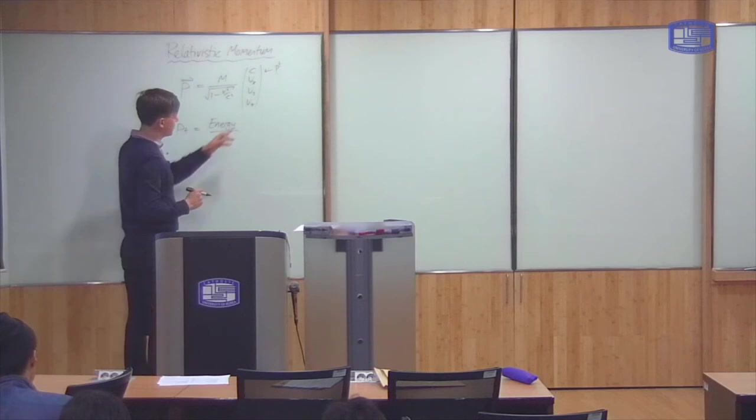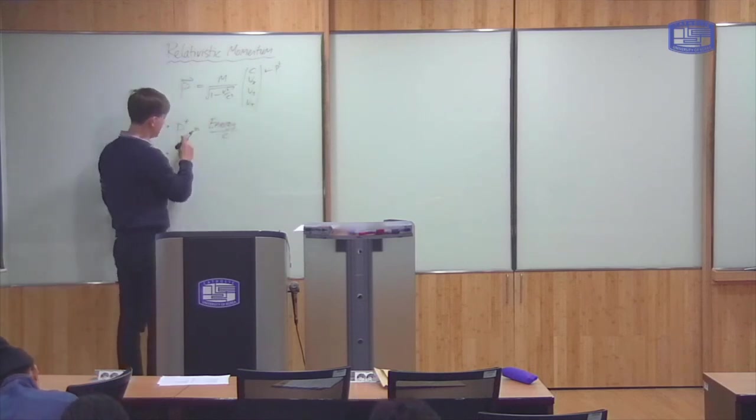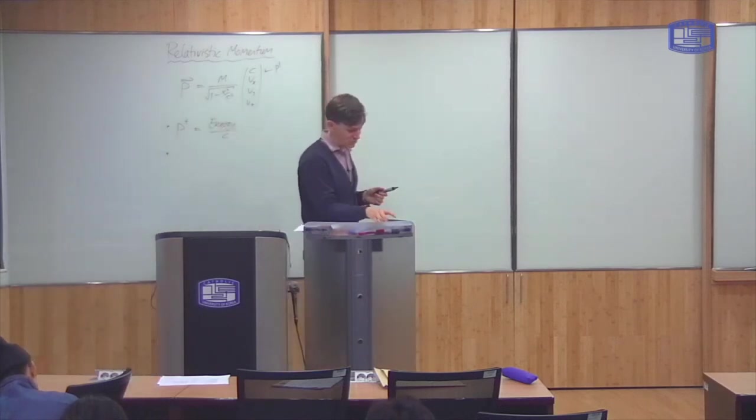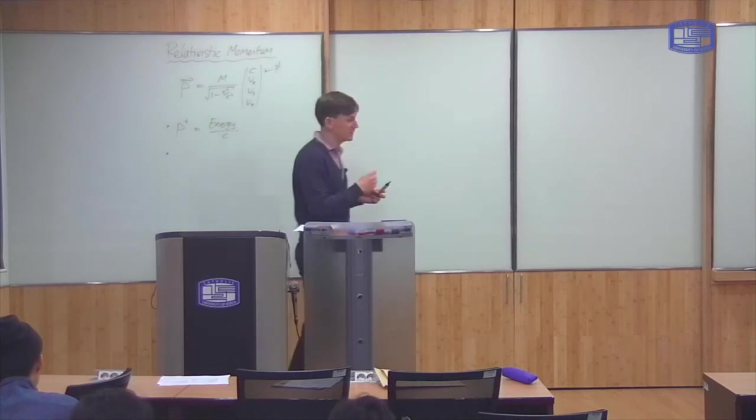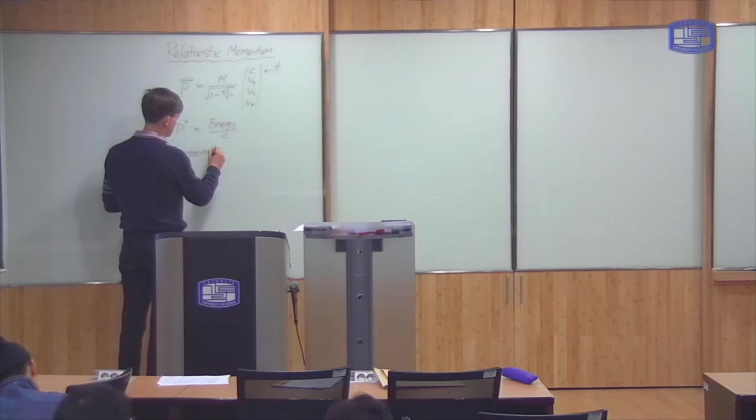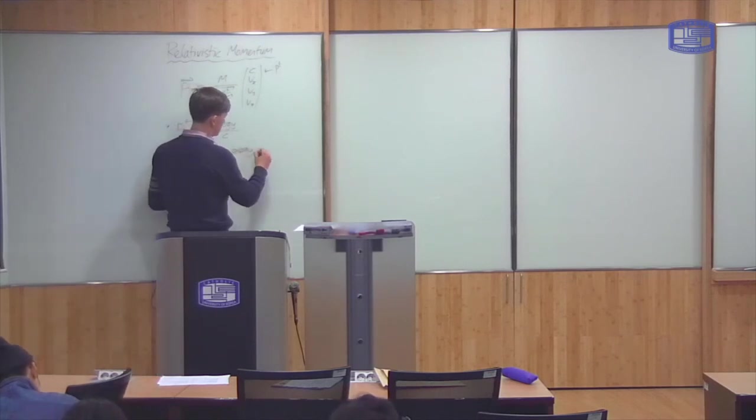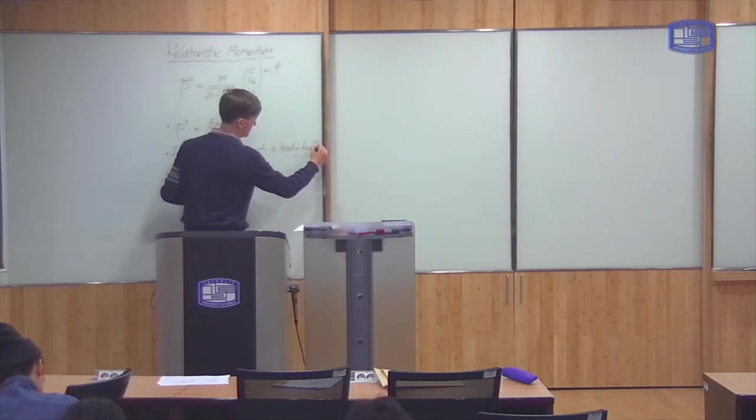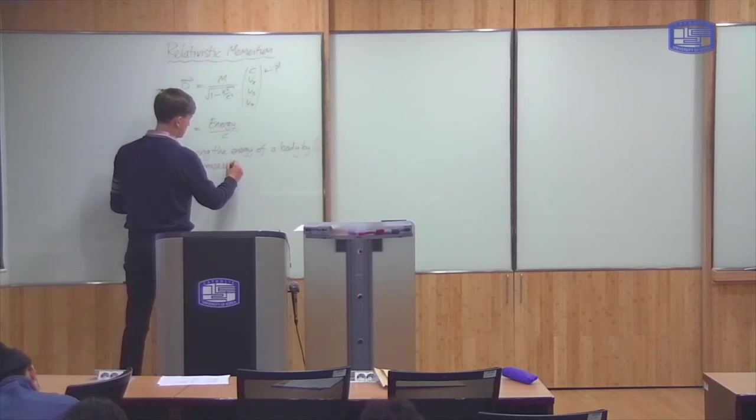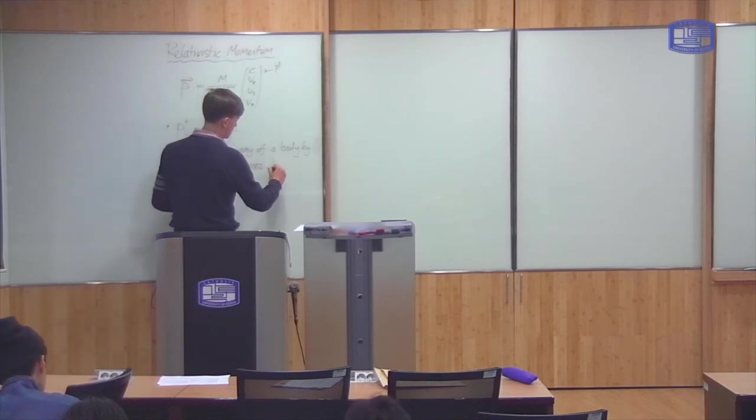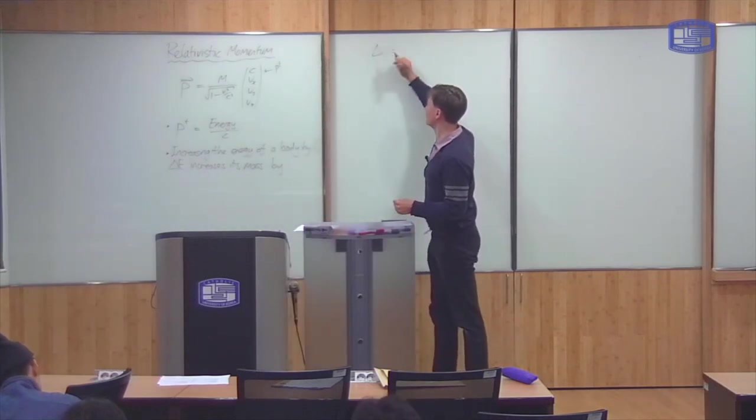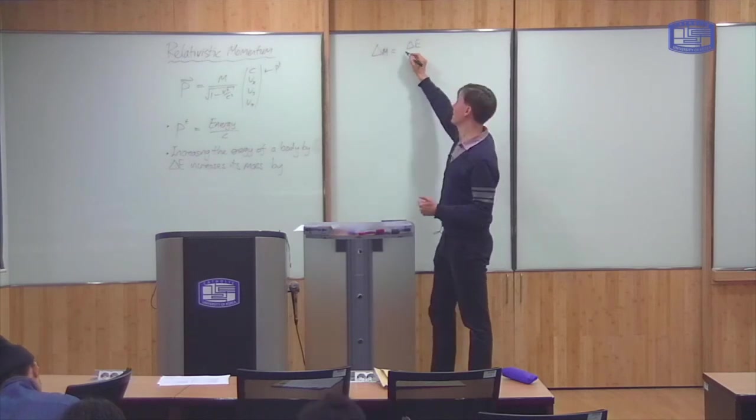And a consequence of the conservation of this thing is that if you give a form of energy to a body, let's say you heat it up, then that must also increase the mass in order for this time component to be conserved. So, increasing the energy of a body by a certain amount, delta E, increases the mass by, the change in the mass of the body is equal to the amount of energy that you give it or take away, divided by c squared.